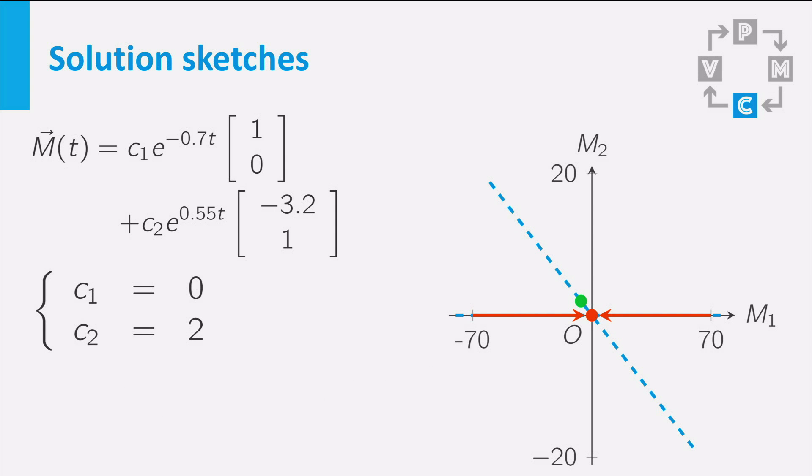Now consider c1 to be 0 and c2 to be 2, which gives the point minus 6.4, 2. Now only the exponential function with the positive eigenvalue remains in the solution, multiplied by the second eigenvector. When time increases, the exponential becomes bigger and bigger.